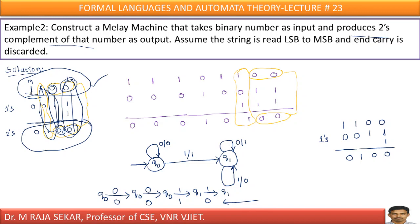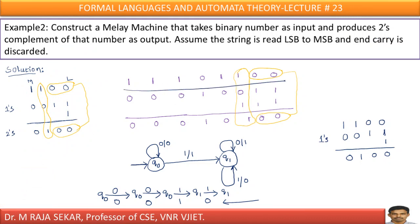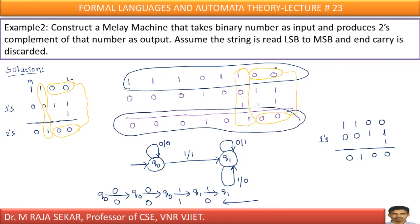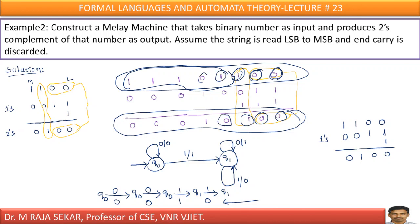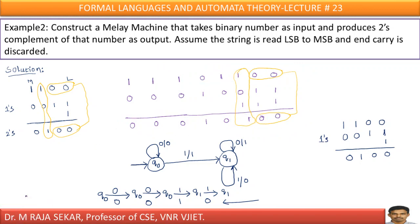Taking one's complement means: if you come across one, just make it zero; if you come across zero, just make it one. Let me consider one more example. This is the original number, and this is the two's complement of that number. If you come across zero, keep it as zero. Keep zeros as they are until the first one — keep that first one as it is. From here onwards, replace one with zero and zero with one. This is the procedure to find the two's complement of a given binary number.